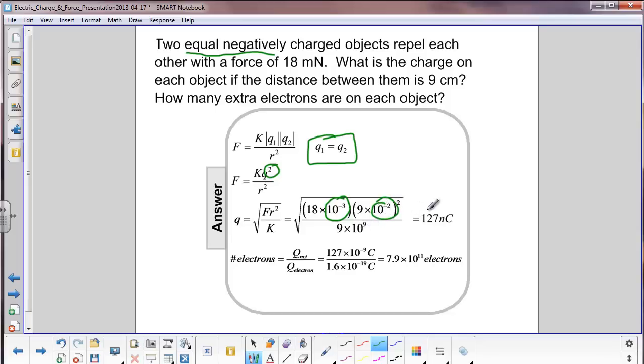We now multiply it all out and we get 127. Actually, your calculator will show something like 127 times 10 to the minus 9th, which we change to nanocoulombs. We now want to find out how many electrons are causing this charge.